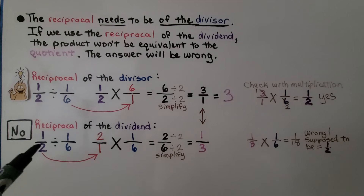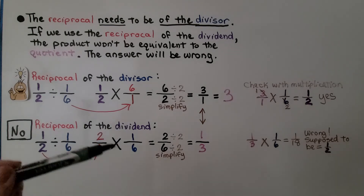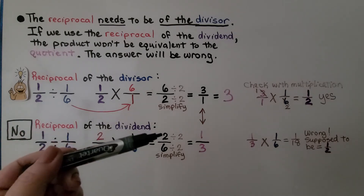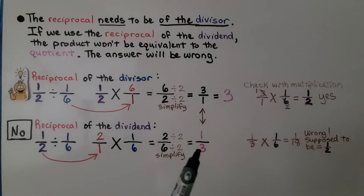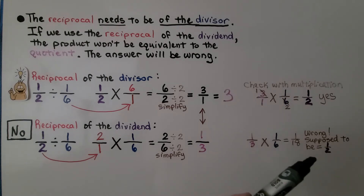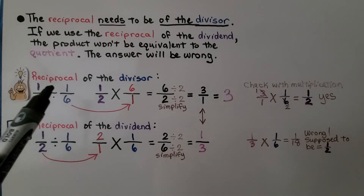If we do the reciprocal of the dividend — instead of one-half times six over one, we have two over one times one-sixth. When we multiply straight across, two times one is two, one times six is six. We now have two-sixths, and when we simplify it, we get one-third. That's not three whole. And if we try multiplying one-third times one-sixth, it's supposed to equal one-half, the dividend — but we get one-eighteenth. That is not correct. So it cannot be the reciprocal of the dividend; it has to be the reciprocal of the divisor.